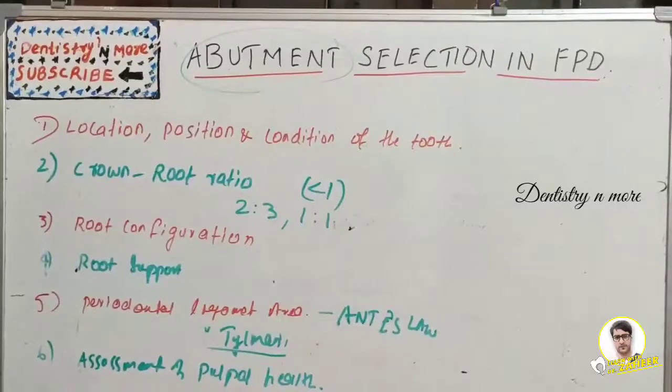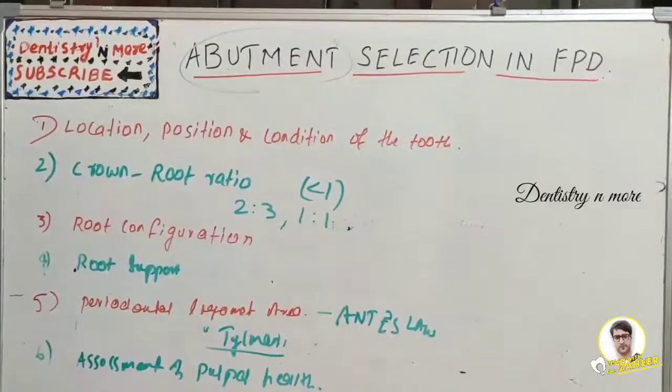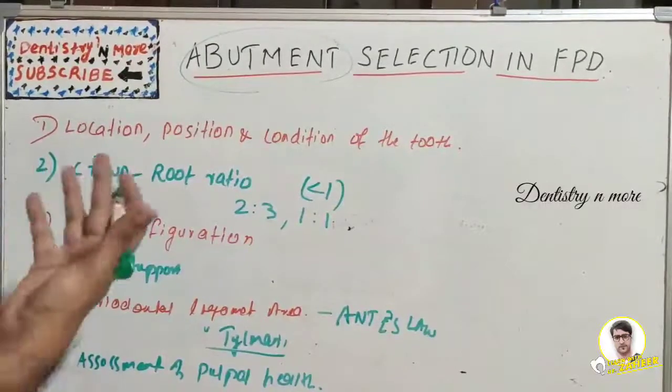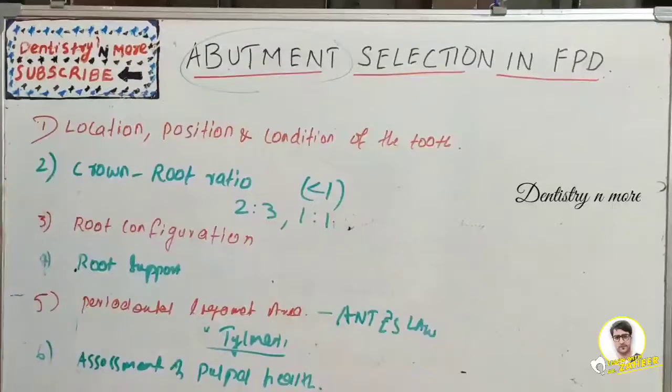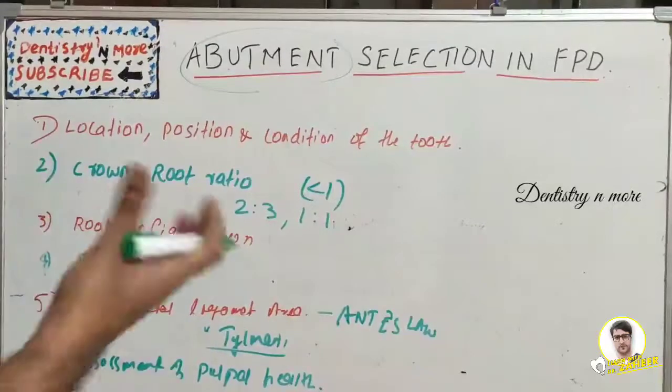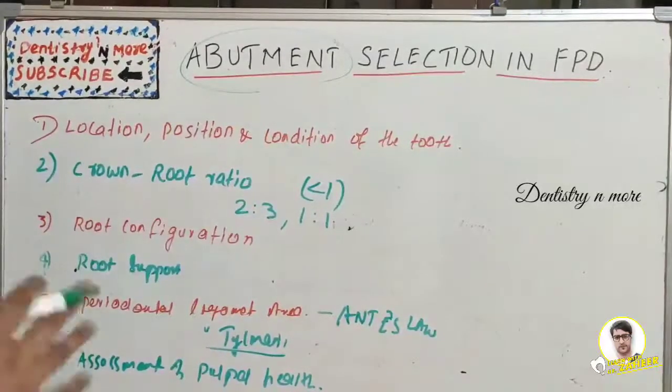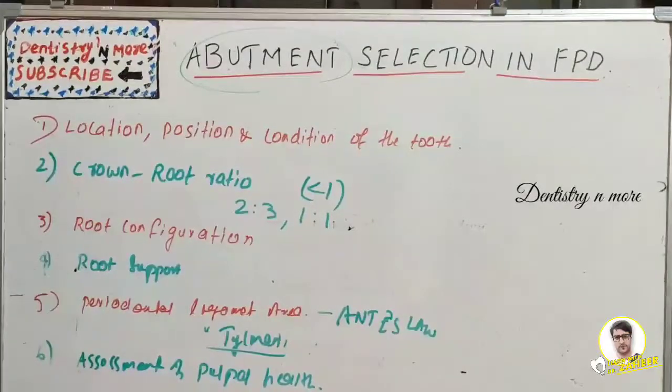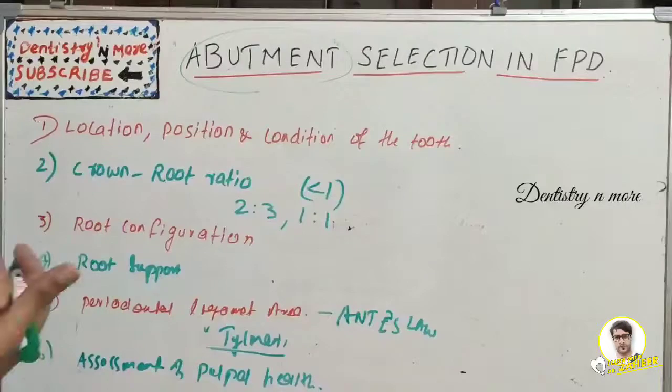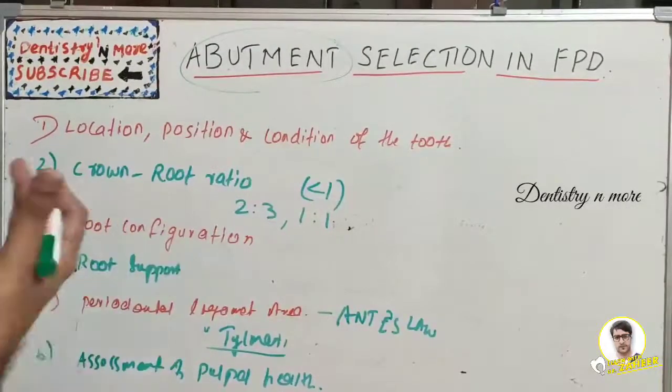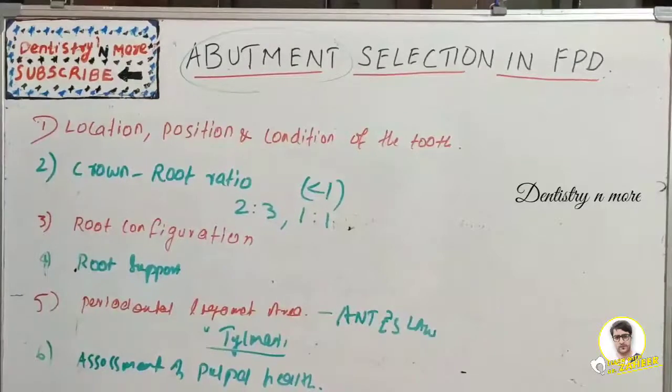Lastly, the assessment of pulpal health. Usually unrestored abutments are preferred rather than endodontically treated or pulpally inflamed teeth which underwent restoration. Such teeth should be avoided. If caries is present, regular preparation can be done. If the caries lesions are large, they should be scooped out and can be used for additional retention rather than primary retention. If the abutment tooth has a caries lesion with pulpal involvement where RCT is advised, such abutment should be avoided.